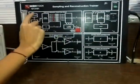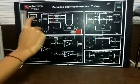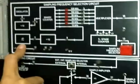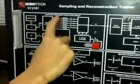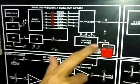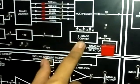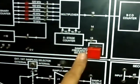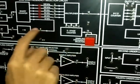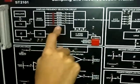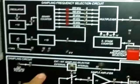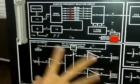This is a natural frequency oscillator, this is a modulating signal, this is a sampling frequency selection socket, and this is a multiplexer. This is a 5-stage counter and this is a sampling frequency selector from which we can select 10 kHz to 320 kHz frequency. Now this is a sampling socket.